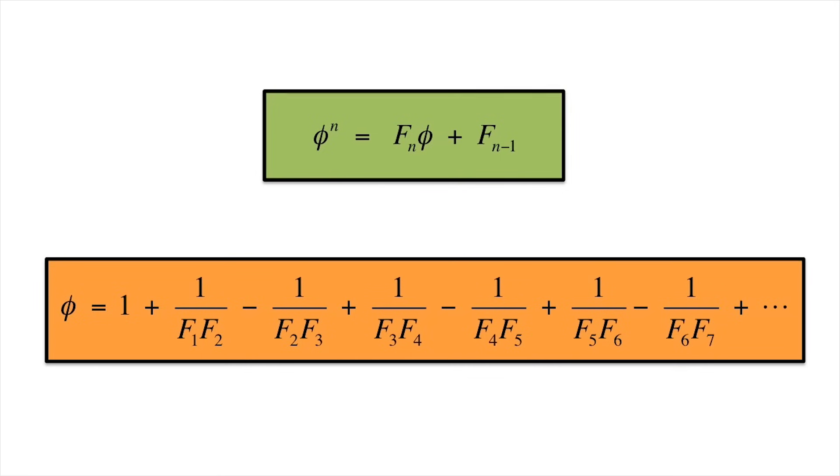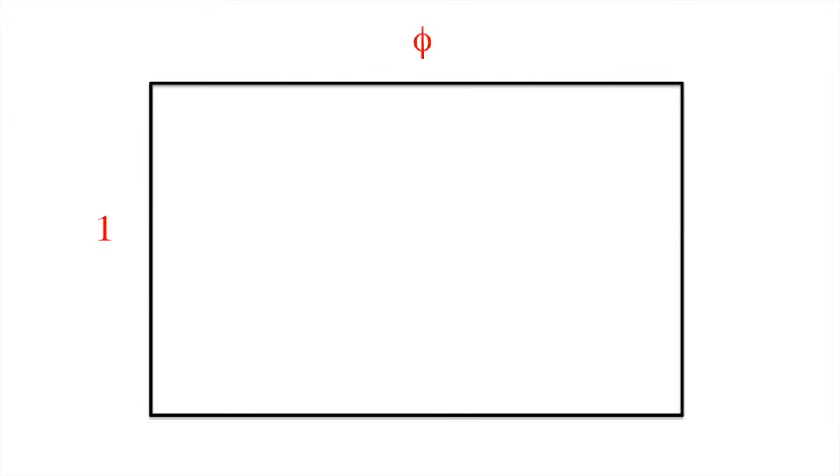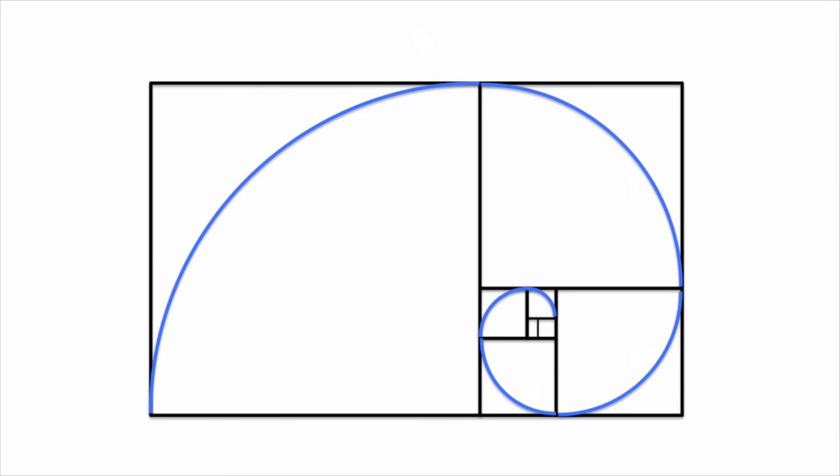As a bonus, here are two formulas that connect powers of the golden ratio to the Fibonacci numbers. Okay, let's get back to geometry. A golden rectangle can be progressively dissected into squares whose side lengths depend on Phi. Some people also like to draw the golden spiral.